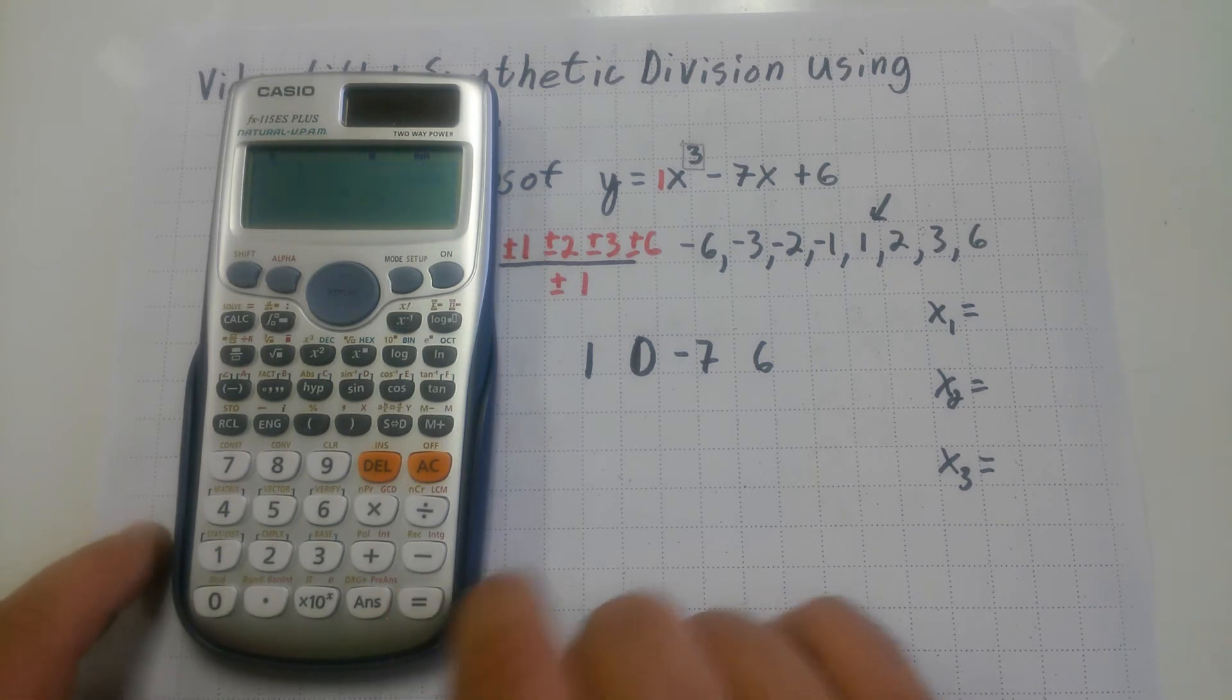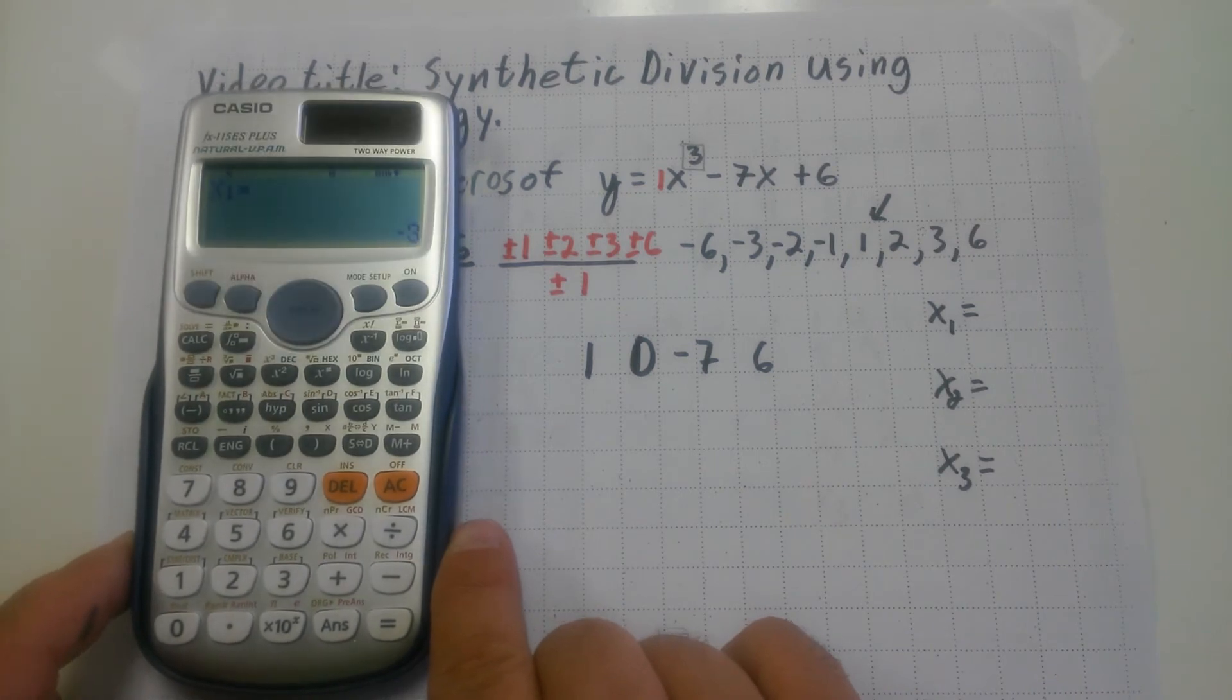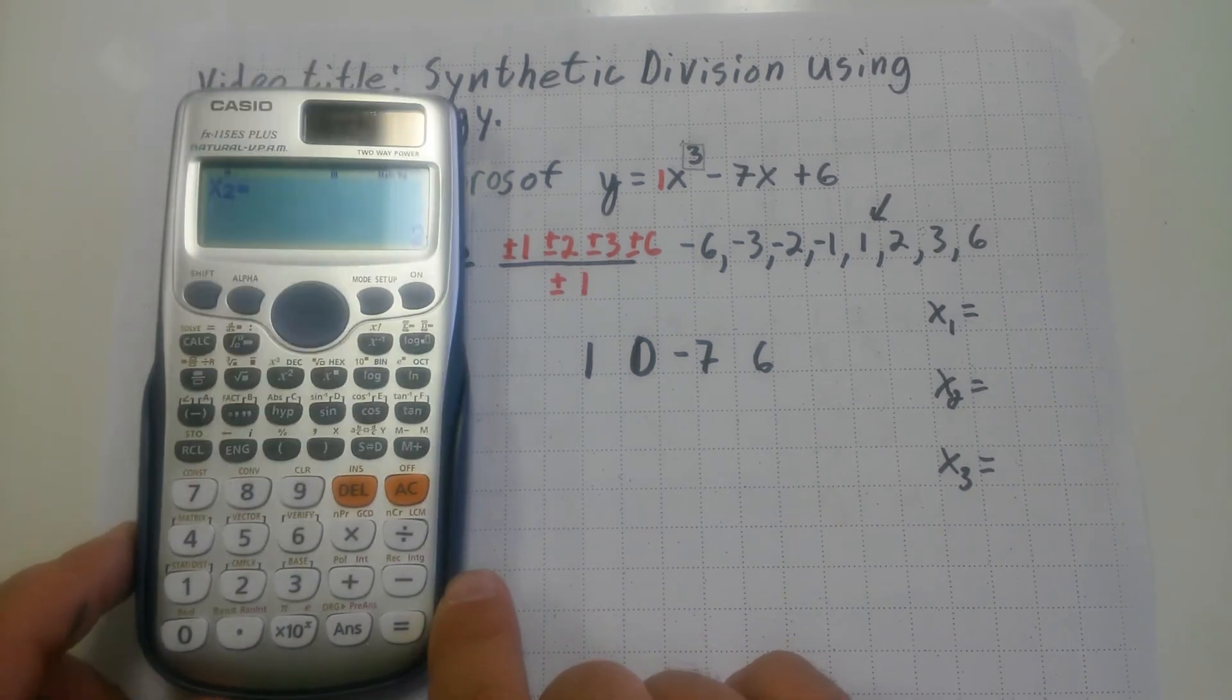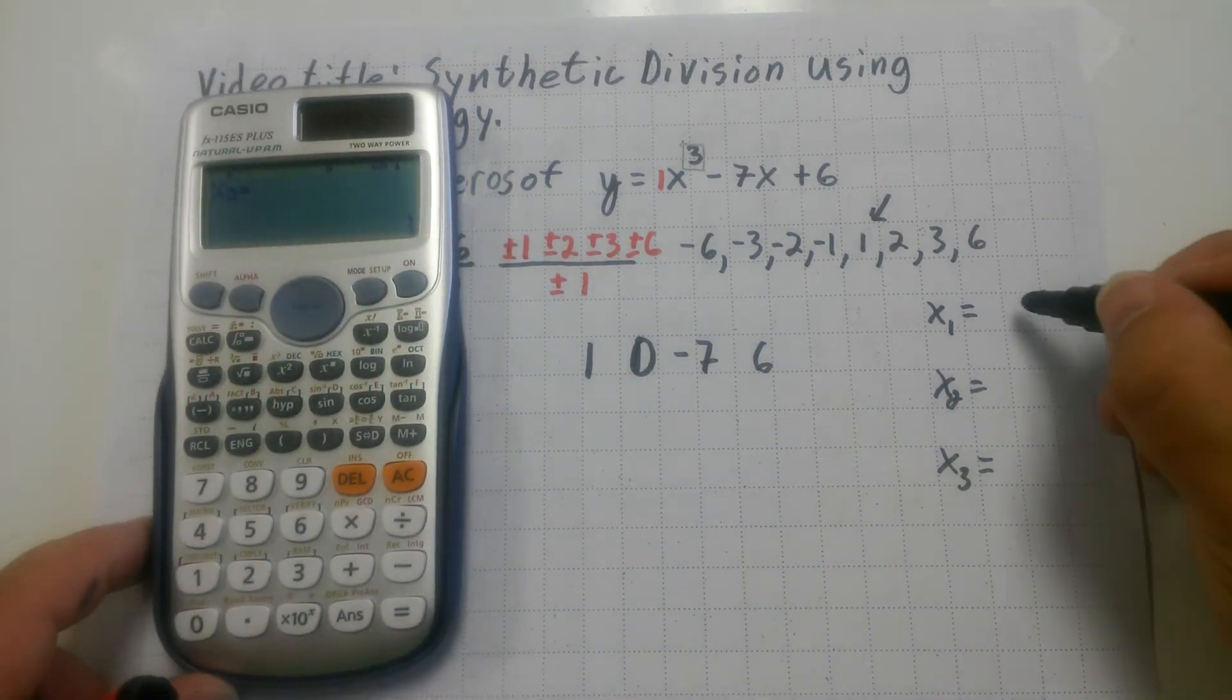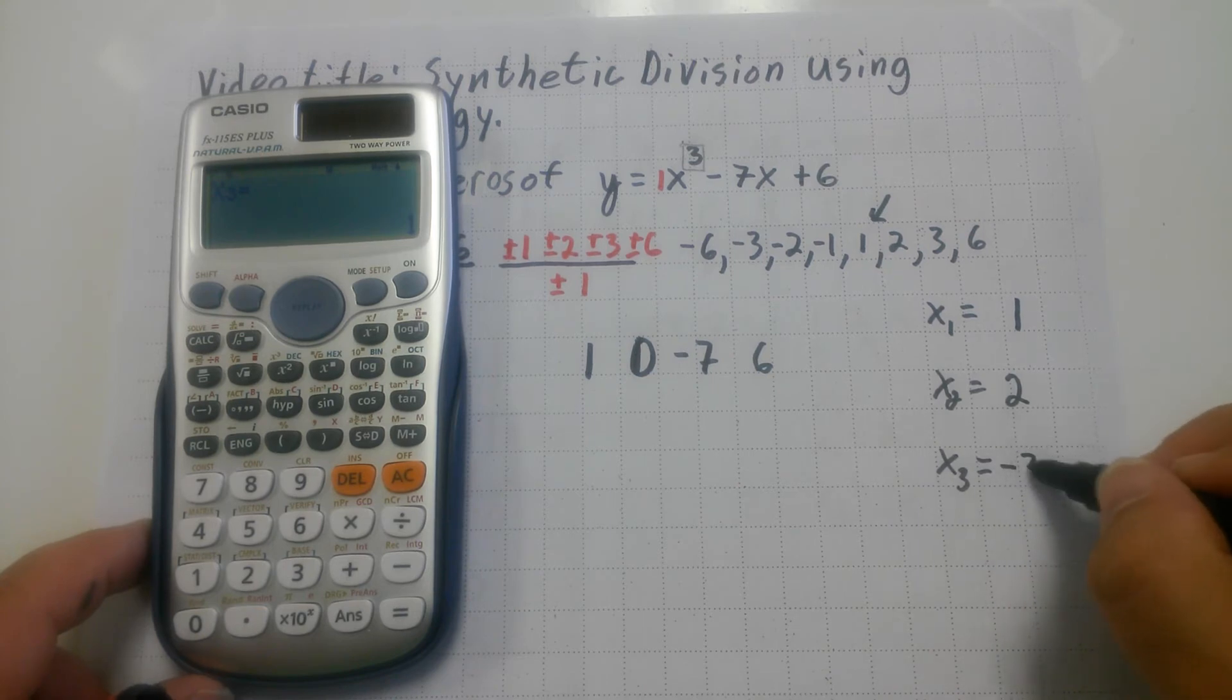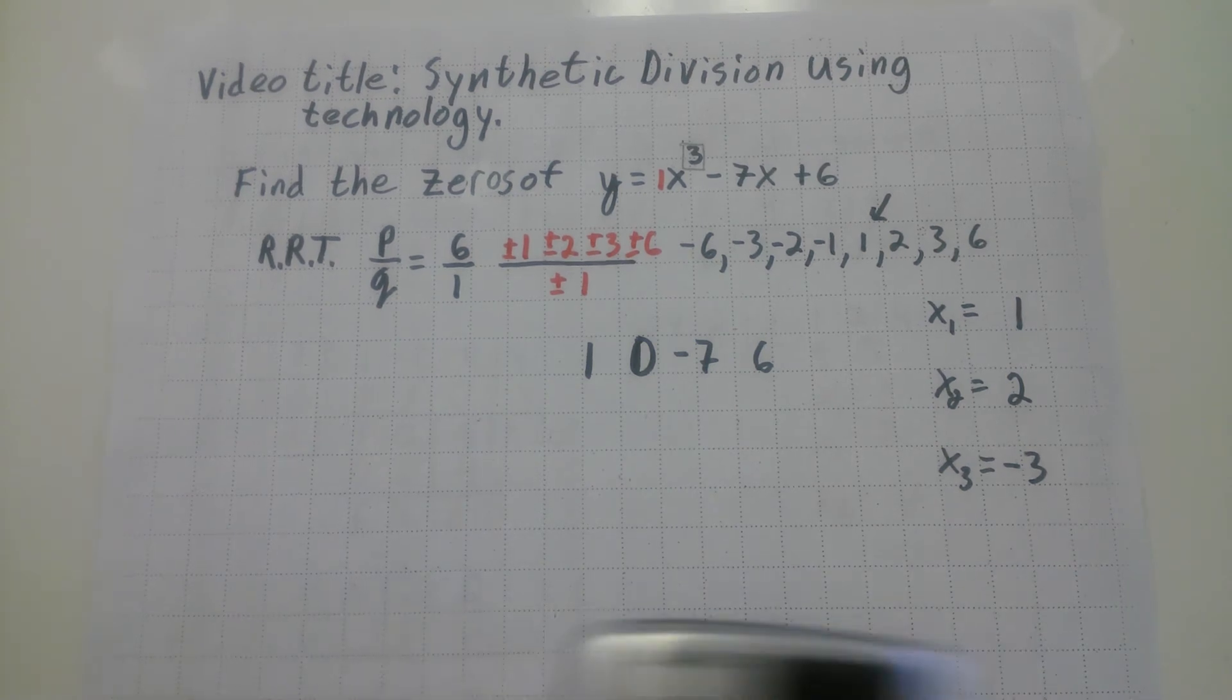Now, when I hit equals, it gives me one of the solutions. And it says X1 is negative three, it says X2 is two, and X3 is one. Now, I'm going to be kind of shrewd, and I'm going to write one there, two there, and negative three there. Because I'm going to do synthetic division now to prove that those are the correct answers. And here it comes.